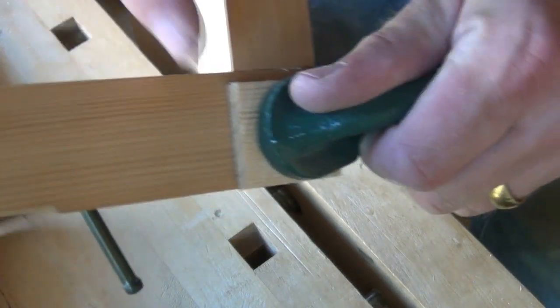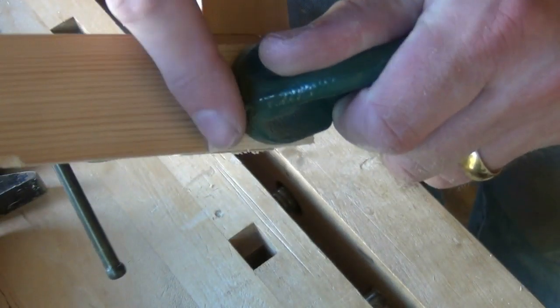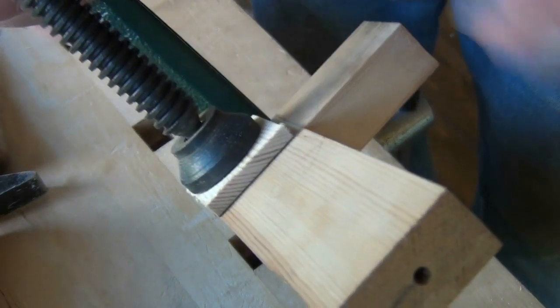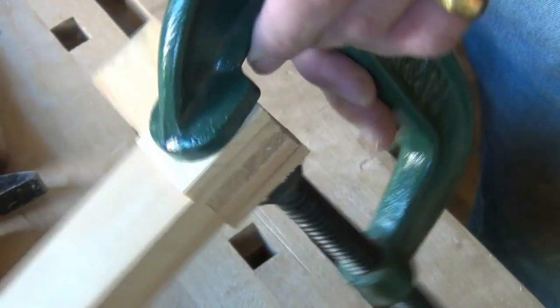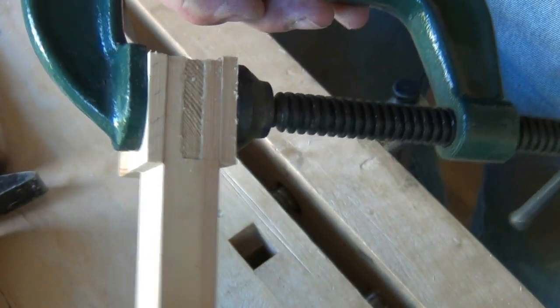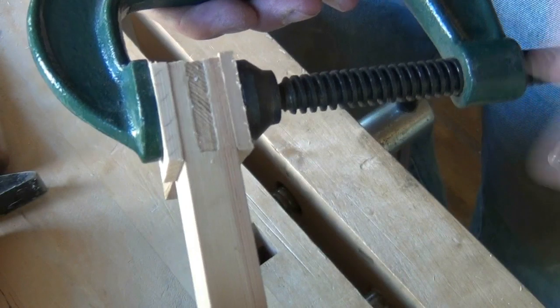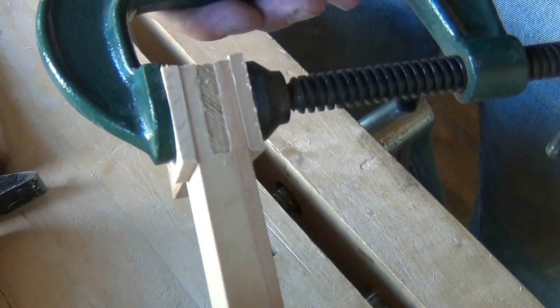Glue up using the off cuts from the tenon as packing pieces to prevent marring your work. And once that's dry we'll flush the edges with a plane and I'll show you the result.